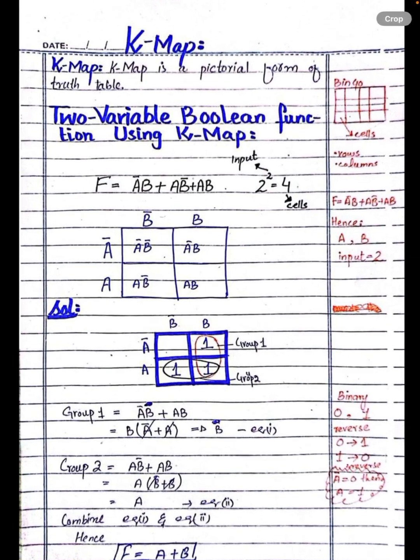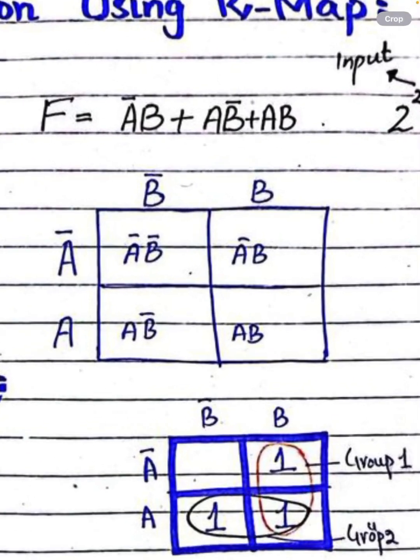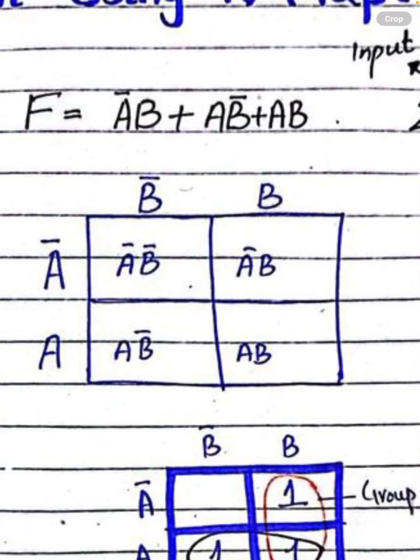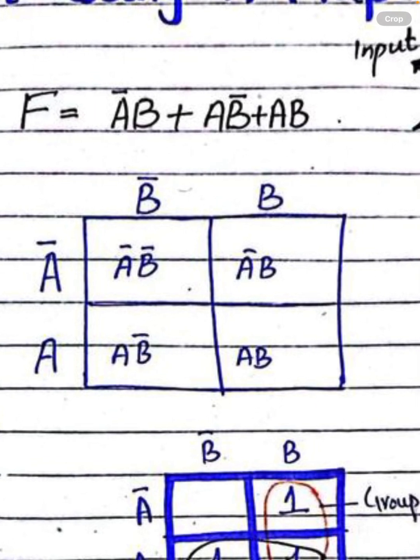We have to create 4 cells — we have to create boxes. Now you can see these boxes. What number will be in the first box?